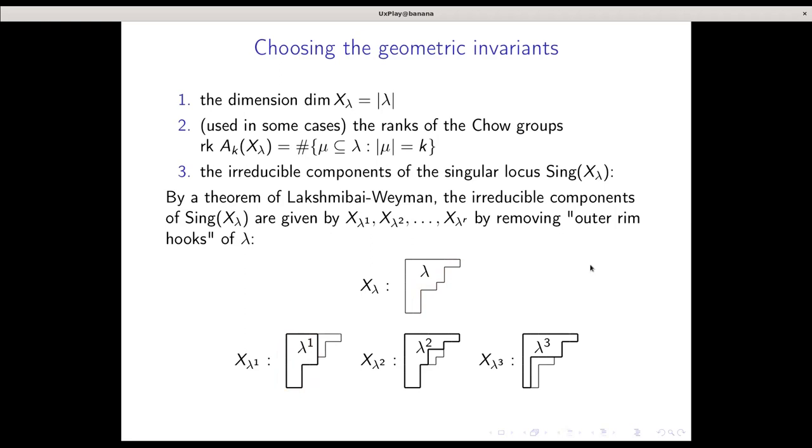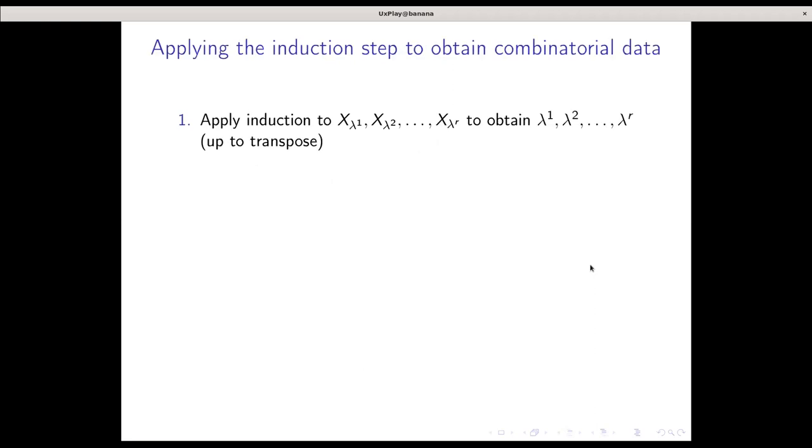Now I wish to translate these geometric invariants with Schubert subvarieties of X_lambda into something combinatorial which tells me things about lambda. I apply induction on the dimension of my X_lambda or on the size of lambda, which is the same, to obtain these smaller Young diagrams from before up to transposition. I also require an additional ingredient, which is their intersection, which geometrically corresponds to the intersection of all the irreducible components. Due to induction, this is up to transpose.